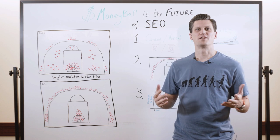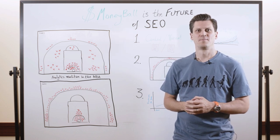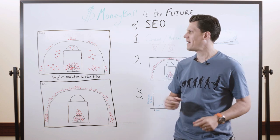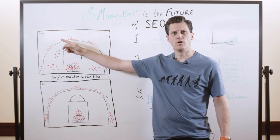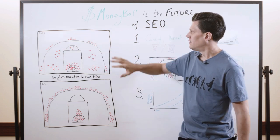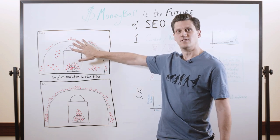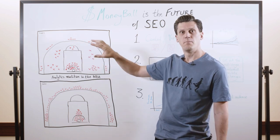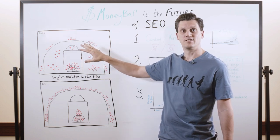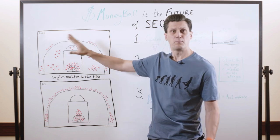Hi MOZ fans, Will Critchlow here, CEO at SearchPilot. I want to start today by talking about the NBA in 2001. This is what the shot chart looked like. So these are the 200 most commonly shot from locations in the NBA in 2001.